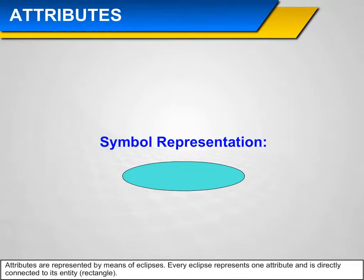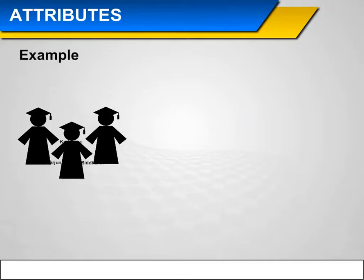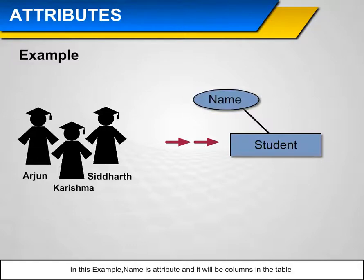Symbol representation of attributes: Attributes are represented by means of ellipses. Every ellipse represents one attribute and is directly connected to its entity, i.e., rectangle. Attributes describe various characteristics about an individual entity. Example: In this example, 'name' is an attribute and it will be a column in the table.